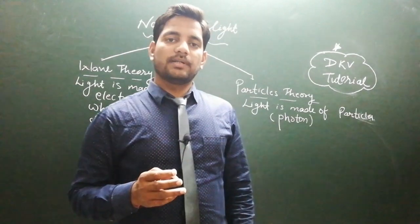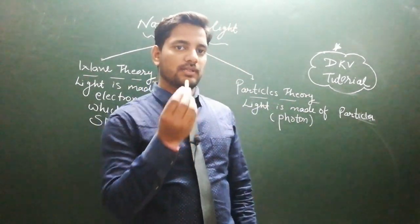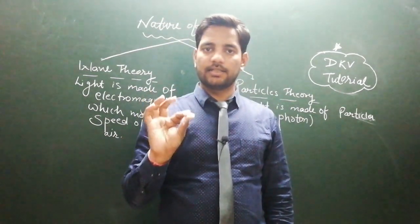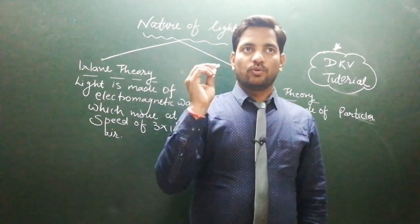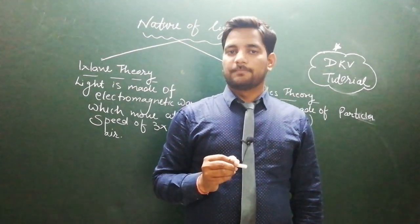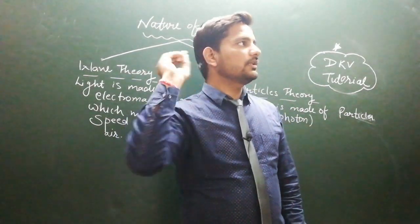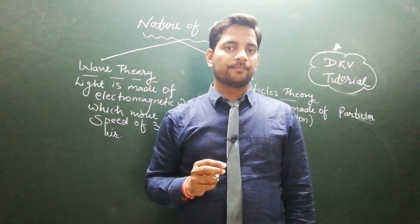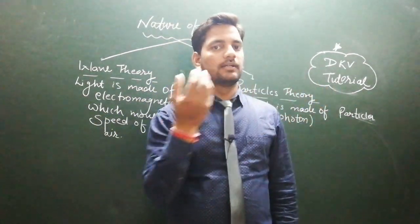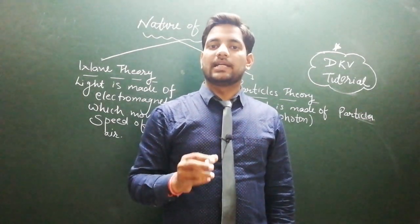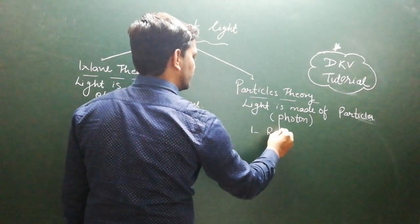For example, in 8th standard you studied reflection — when light hits a shiny surface it bounces back. Think of it this way: I have a chalk here. If I throw this chalk at a surface, it will hit the surface and bounce back. This bouncing-back behavior is the nature of a particle, not a wave. Just like a ball hit against a wall bounces back, light hitting a surface and bouncing back shows that light has particle nature. There are some phenomena — like reflection and refraction — which are explained only by particle theory.